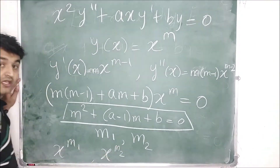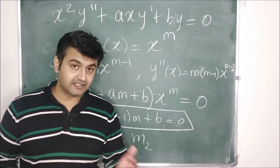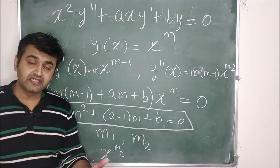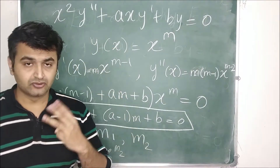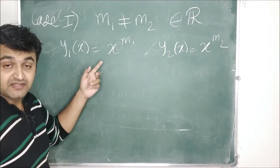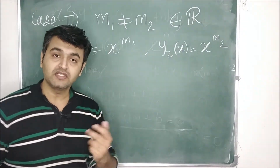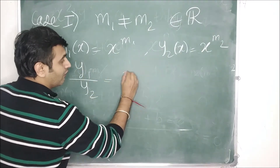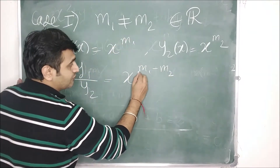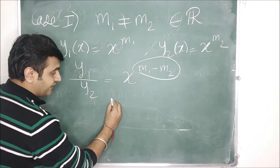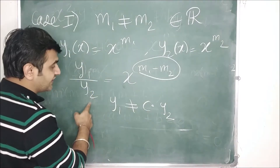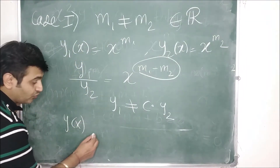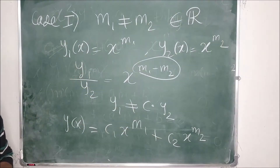If m₁ and m₂ are distinct, the solutions x^(m₁) and x^(m₂) are linearly independent. The ratio y₁/y₂ = x^(m₁−m₂), and since the roots are distinct, this exponent is non-zero, meaning the ratio is not constant — therefore y₁ and y₂ are linearly independent. The general solution is y(x) = c₁x^(m₁) + c₂x^(m₂).